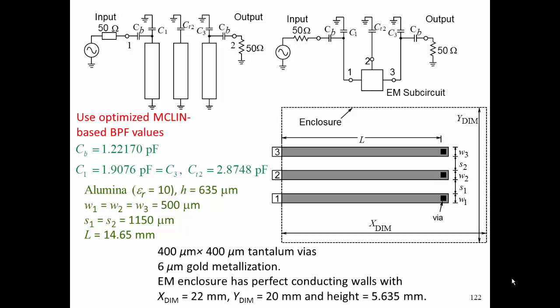We need to choose our EM enclosure. We must put our microstrip inside a box. The simulation requires an EM enclosure with perfect conducting walls. There will be a ground plane with 6 micron thick gold metalization, and the top and four walls will be perfect conductors. We're choosing a box which is 22mm by 20mm by 5.635mm - that's 5mm plus substrate thickness. We want the separation from the microstrip line to the side wall to be quite a bit more, about two or three times as much as the separation of two microstrip lines.